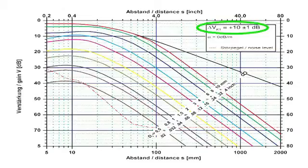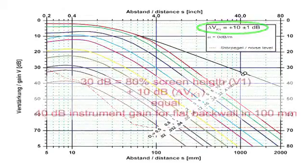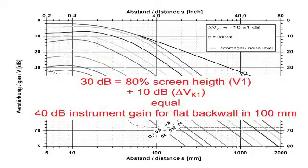In the example shown here, if a gain of 30 dB is needed to bring the echo from the cylindrical surface of a V1 at 100 mm depth to 80% screen height, then one would need an additional 10 dB of gain to bring the echo from a flat back wall at 100 mm depth to 80% screen height.